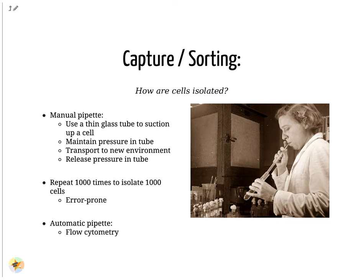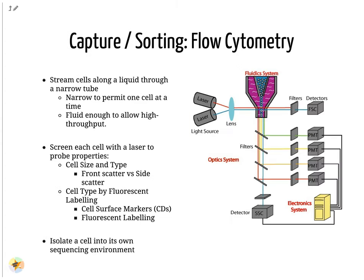Another method is flow cytometry, which reduces the human error component of this stage. Flow cytometry floats cells in a shallow liquid bath and streams them along a narrow channel, just narrow for one cell to pass through. Cells can be screened by a variety of properties this way, such as by their light scatter properties and from fluorescent cell labeling. Cells can be tagged and isolated in this manner.